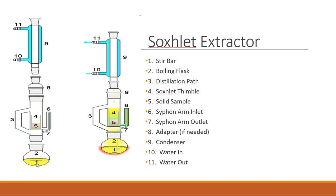The liquid soaks through the cotton and into the peanut sample, gradually filling the Soxhlet extractor. When the liquid level reaches the elbow at number six, it automatically siphons over and drains through number six and number seven back down into the boiling flask — and the process repeats. The solvent has a lower boiling point than peanut oil, so it re-evaporates, re-condenses, soaks the peanuts again pulling more oil out each time, and drains again. Each drain cycle is called a rollover.